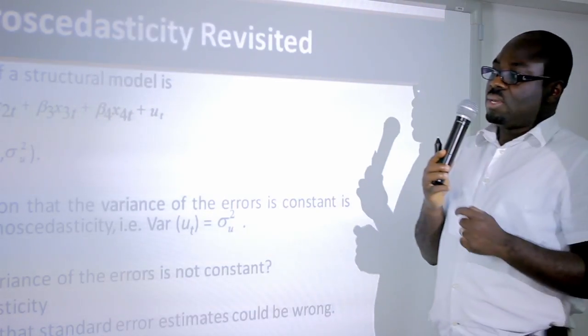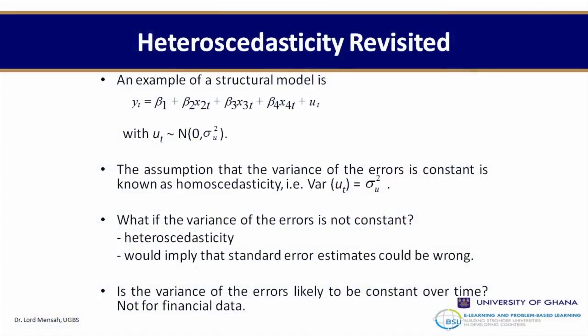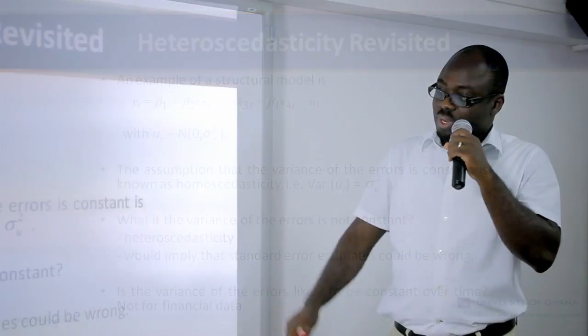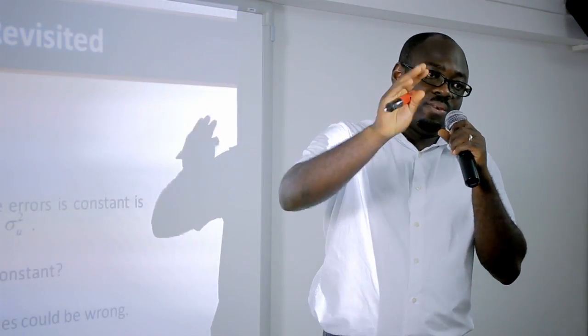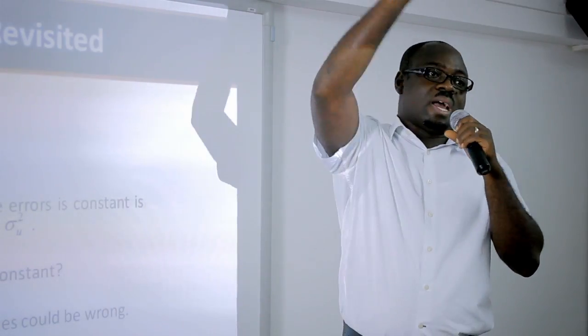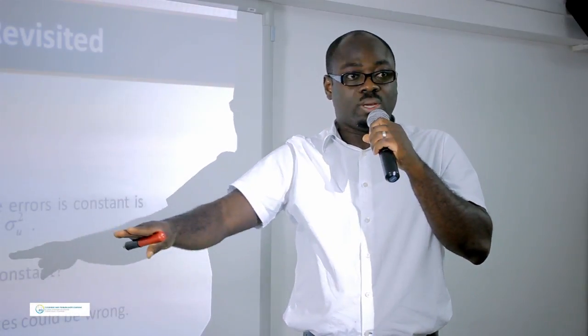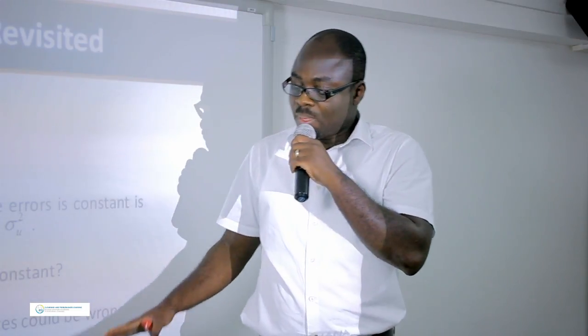The assumption that the variance of the errors is constant is known as homoscedasticity. If the variance is not constant, we have heteroscedasticity, which would imply that the standard error estimates could be wrong. For financial data, the variance is not always constant — looking at the S&P 500 series, the variance varies over time, with places where variance is high and points where it is low.